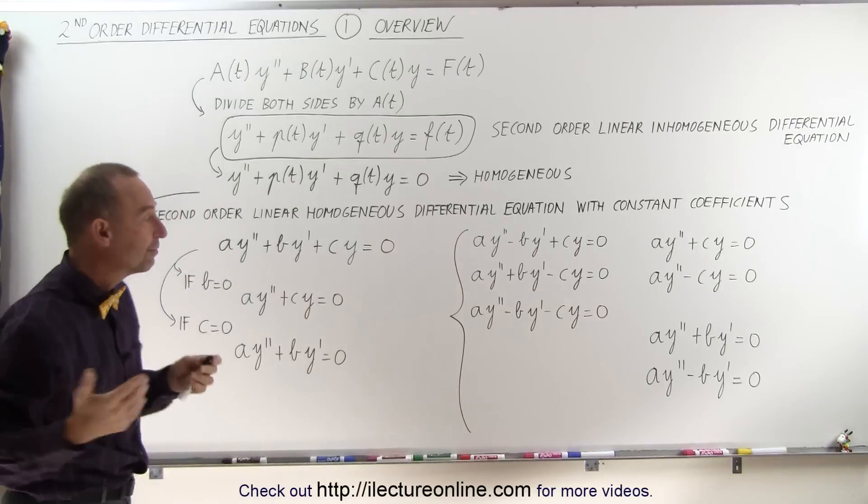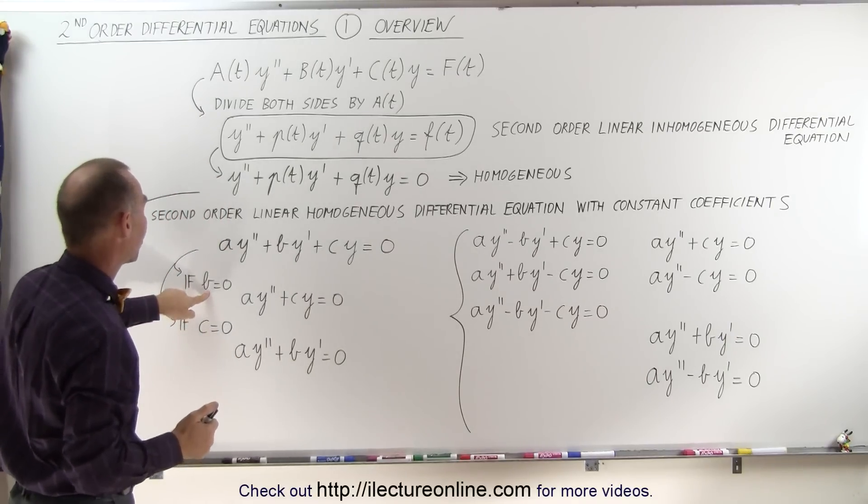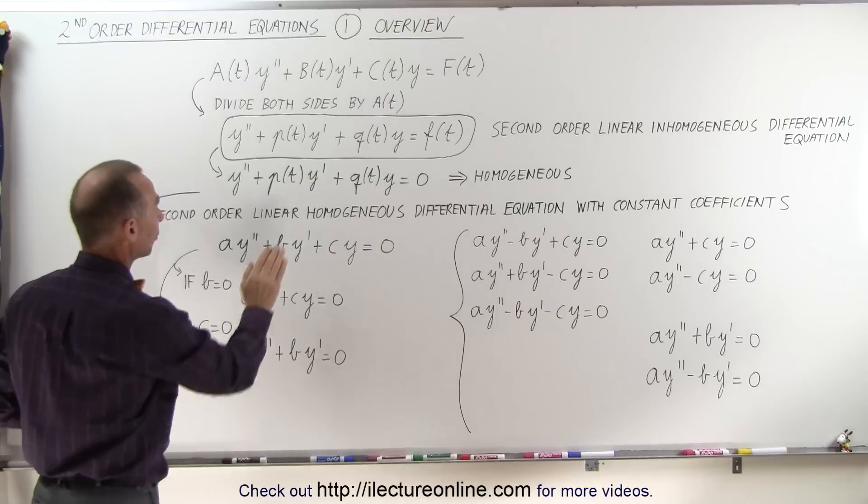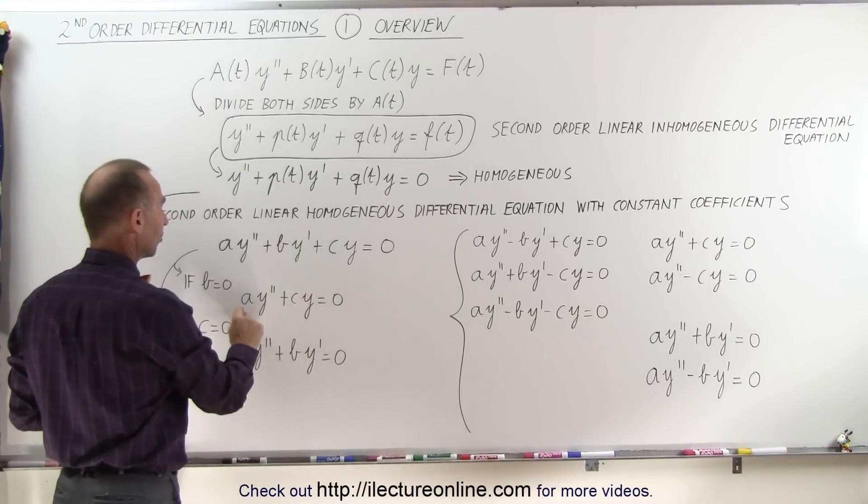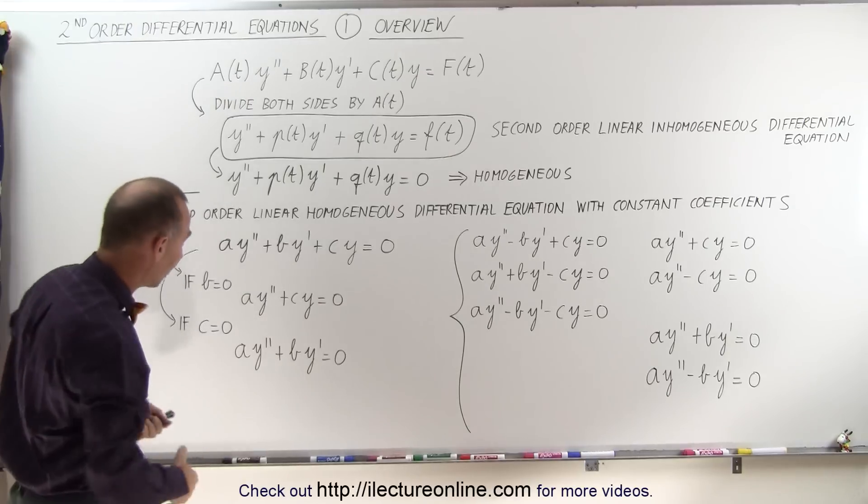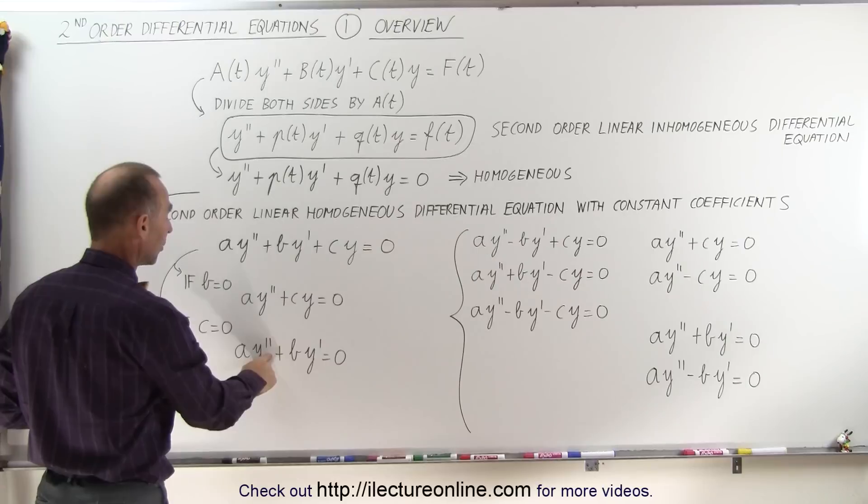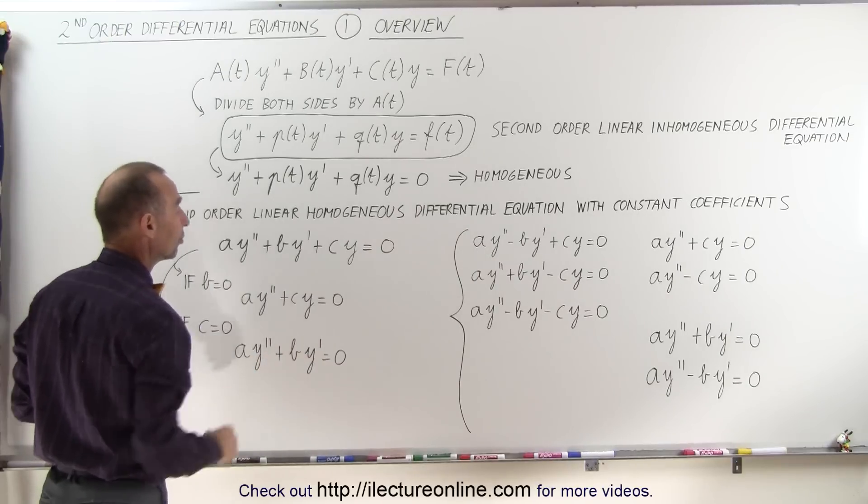And there's a whole slew of different ways in which it can be written. Let's say, for example, that the constant b is equal to zero. That would get rid of the middle term right here, and we end up with something like this: a y double prime plus c y equals zero. Or if we have a situation where c is equal to zero, then we end up with a y double prime plus b y prime equals zero.